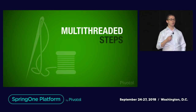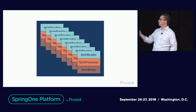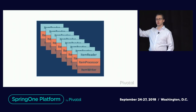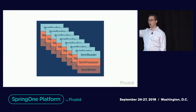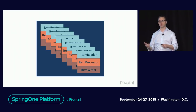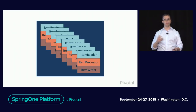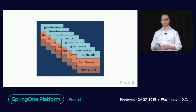With a multi-threaded step, we provide a task executor that launches additional threads to the step, and it will launch each chunk in its own thread. Each call to the chunk-oriented tasklet is called in its own thread, allowing you to execute chunks in parallel. There are some caveats — parallel processing typically means you don't get restartability, or you may depending on how you write the writer. Most of our out-of-the-box ones do not support restartability in this particular example.